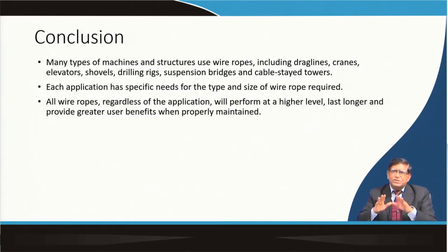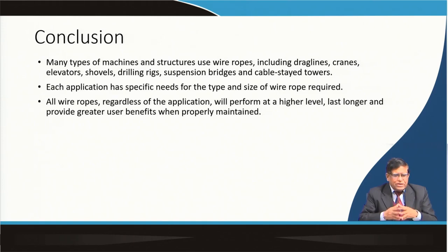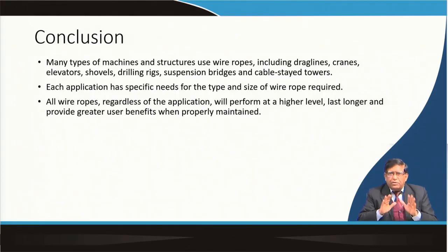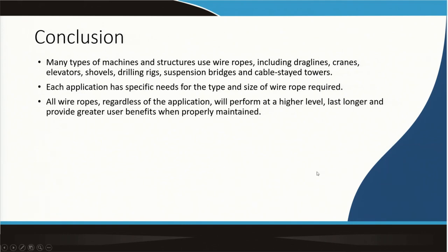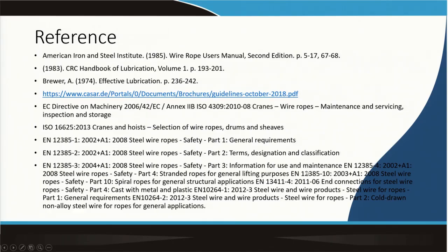Many types of machines — as mentioned in the previous class, draglines, cranes, and others all use wire ropes. For each application there is a special type of maintenance to be followed. You must perform a very high level of cleanliness and lubrication to get better rope life. There are many references in the mining industry because wire ropes are very important and must be maintained to get a longer economic life. We will discuss this again while studying the machines. I hope you now understand what a wire rope is and how it must be used in the mining industry.